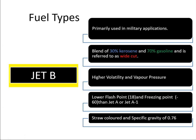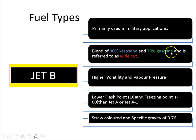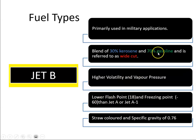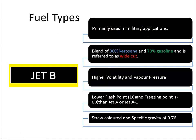Jet B is a blend of both — 30% kerosene and 70% gasoline. This higher percentage of gasoline makes it less susceptible to freezing, giving it a freezing point of minus 60 degrees Celsius. However, the gasoline also gives it a lower flash point of 18 degrees Celsius.